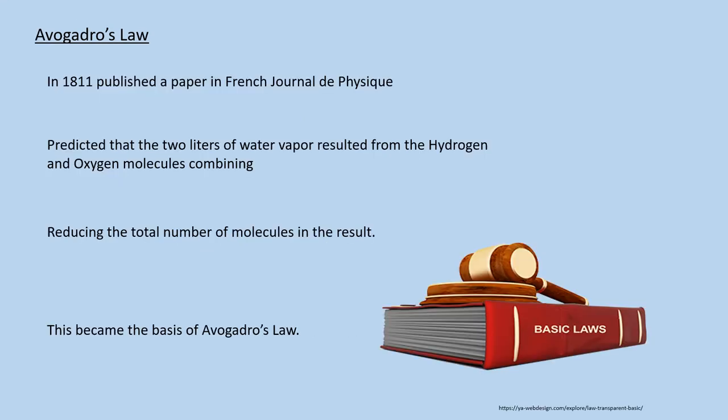In 1811, Avogadro published a paper in the Journal de Physique. No, that's not a French bodybuilding magazine. That's the French Journal of Physics. Stating that the best explanation for Gay-Lussac's results was that equal volumes of all gases at the same temperature and pressure contained the same number of molecules. Avogadro reasoned that the resulting two liters of water vapor occurred because the total number of molecules had decreased. The oxygen had combined with the hydrogen. This became the basis of Avogadro's law.